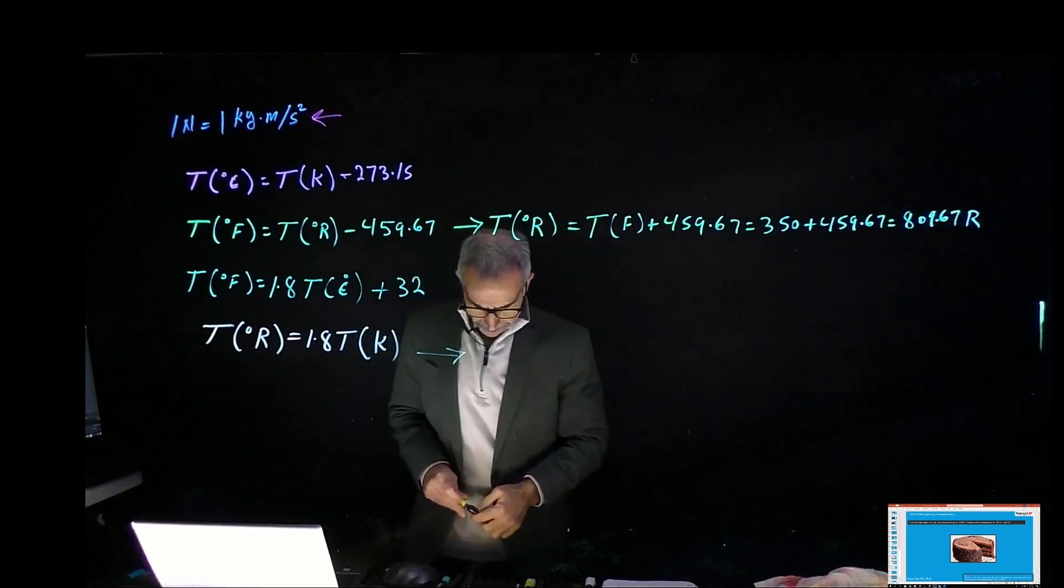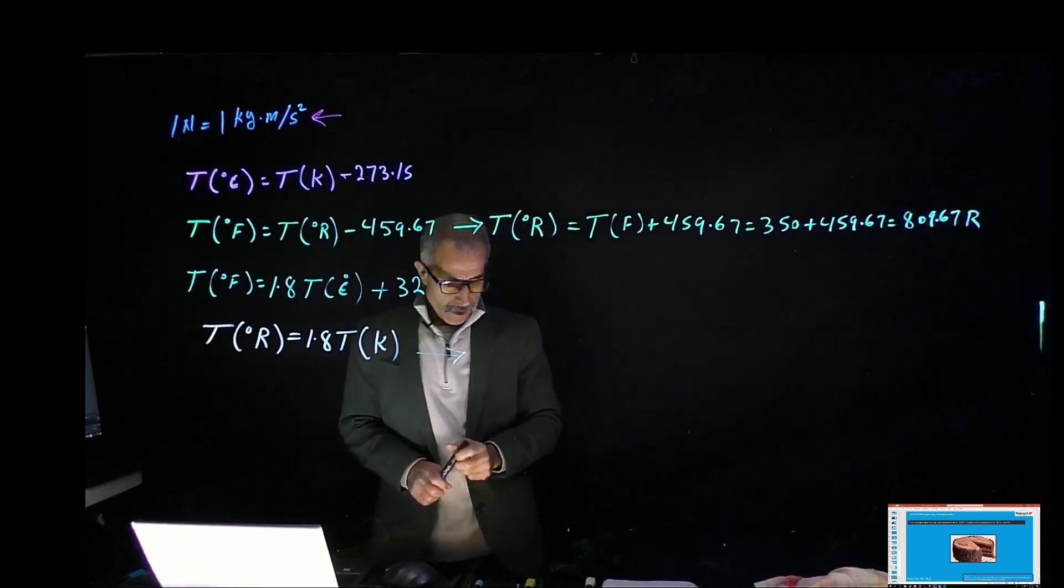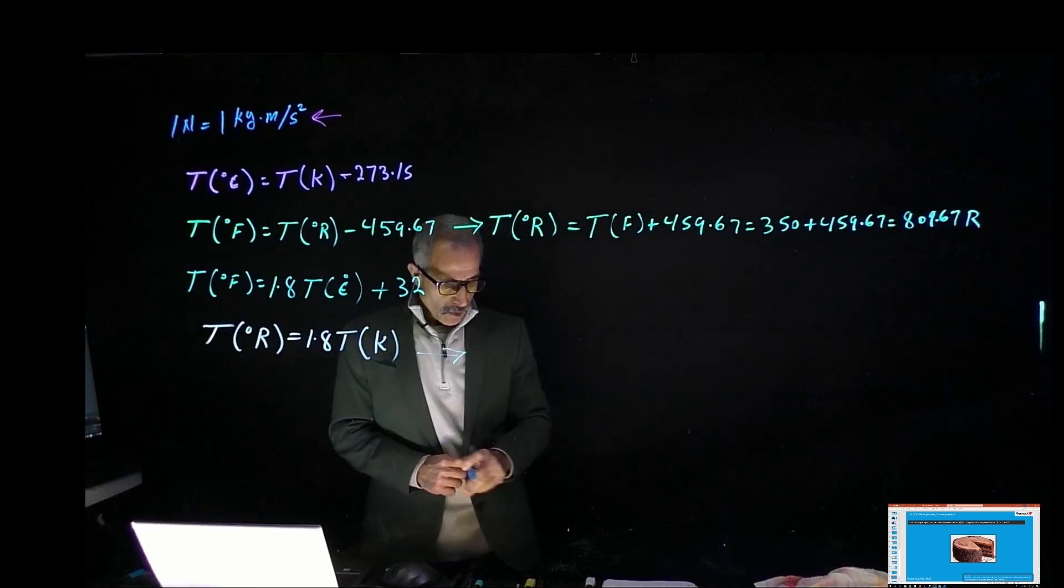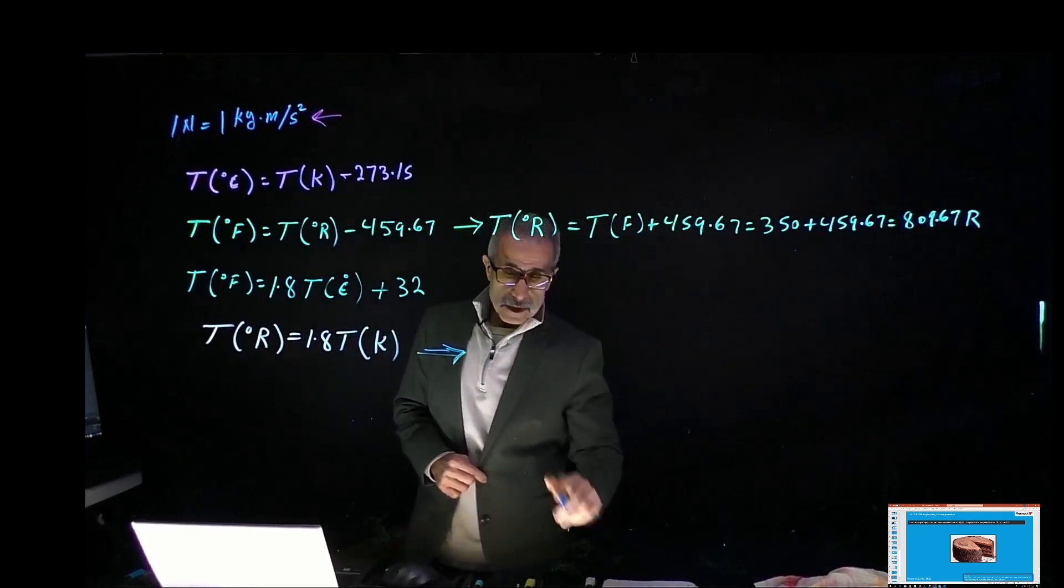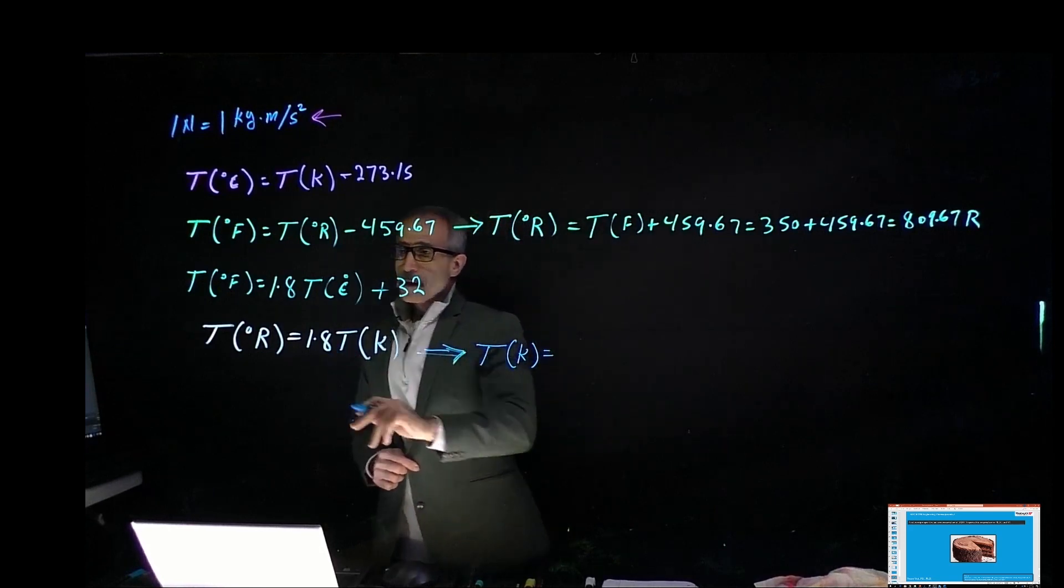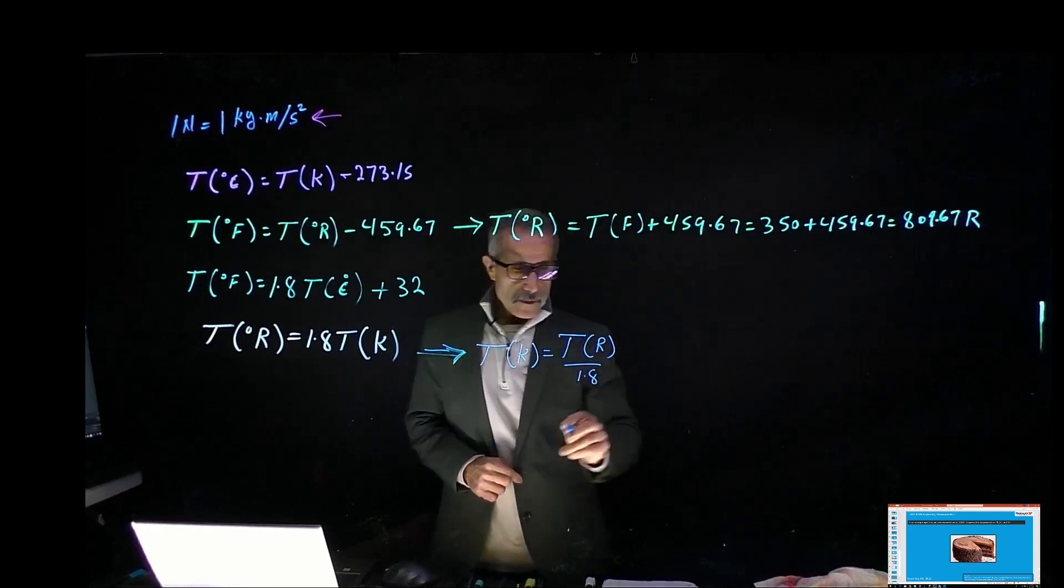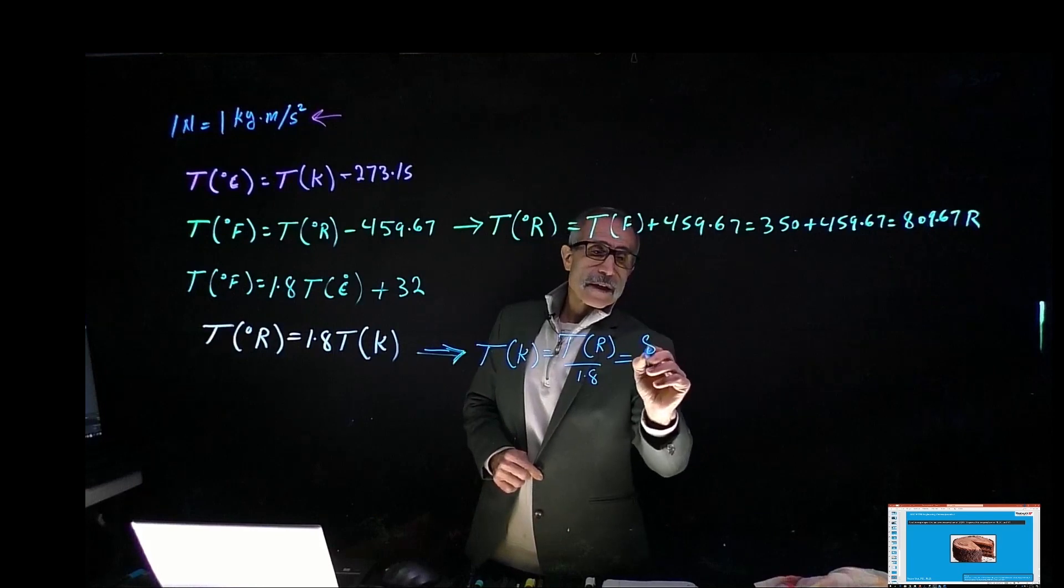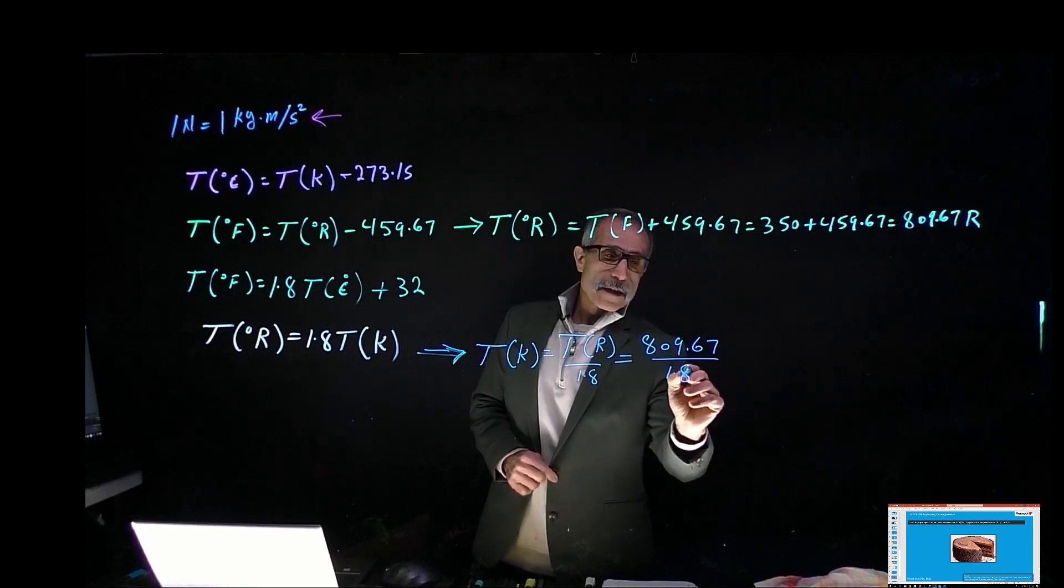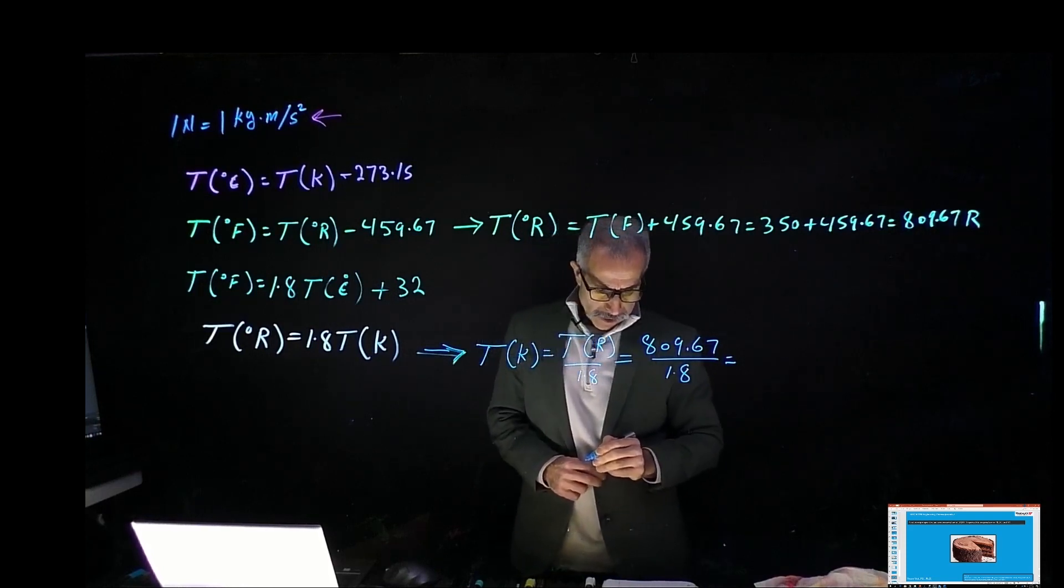The second one we want to do is T of Rankine equals 1.8 times T of Kelvin. Therefore we can say T of Kelvin equals T of Rankine divided by 1.8. I'm going to have 809.67 divided by 1.8, and that will give me 449.82 Kelvin.